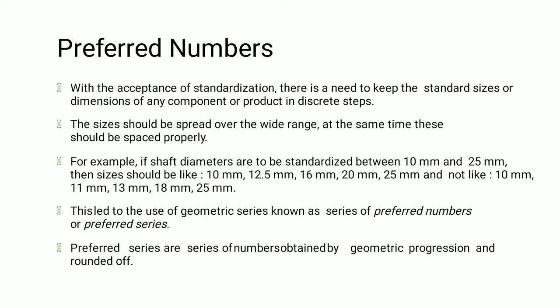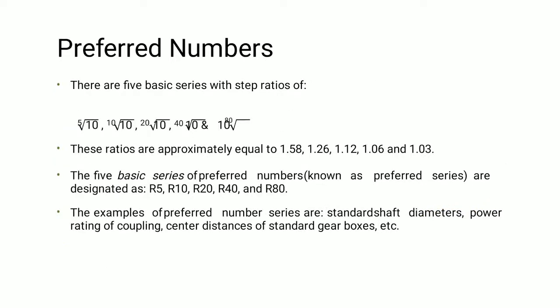For example, if shaft diameters are to be standardized between 10 to 20 mm, then we have to select the standard sizes in between 10 to 25 mm. Whenever we use a geometric series, it is called a preferred series. Preferred series of numbers are obtained by geometric progression and are rounded off. There are five basic series with step ratios.